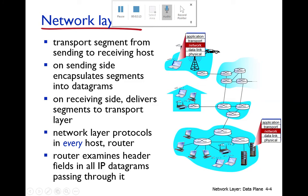On the sending side, the network layer receives data from the transport layer. When the data packet is received, the network layer attaches its own header — this is called encapsulation. The network layer encapsulates the segment into a datagram, adding its own header that includes information about which machine the packet is from and which machine it is moving toward.